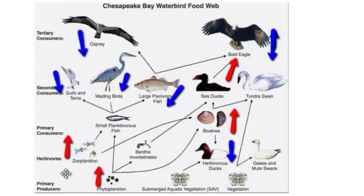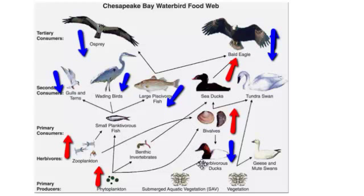Also, zooplankton as well as phytoplankton should increase with less small planktivorous fish, which would directly impact the population of the bivalves. This increase could directly impact the ducks and bring their populations down.